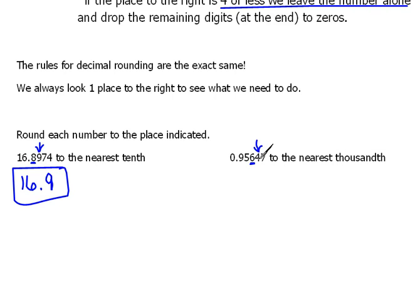Since this is a four, that says that we're going to leave the six as is. So, our number then would be 0.956. That's 956 thousandths. So, now we're rounded to the nearest thousandth position.